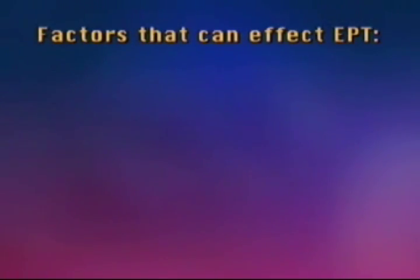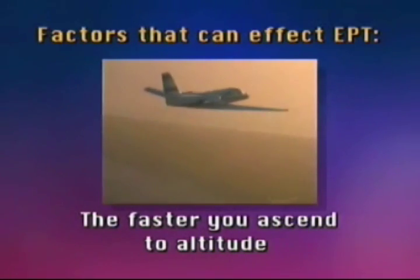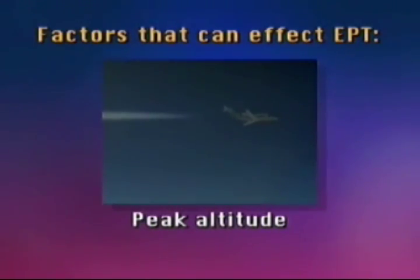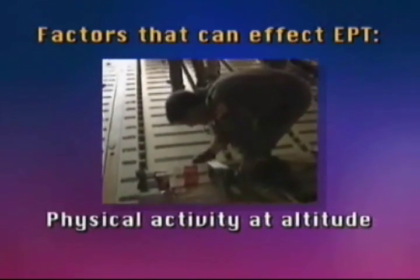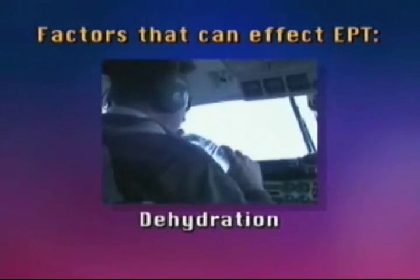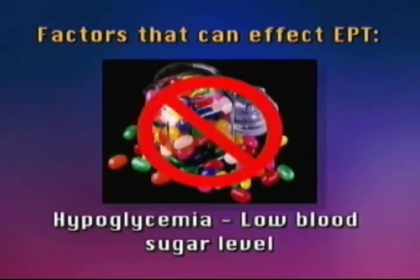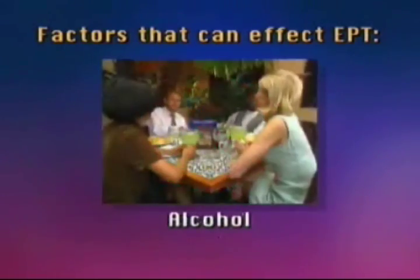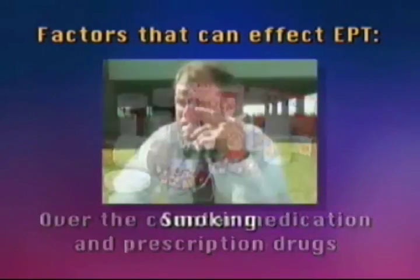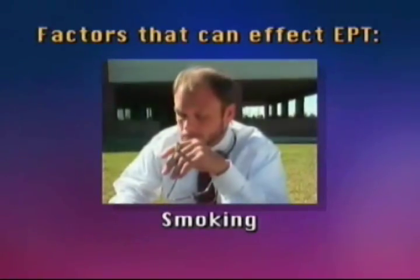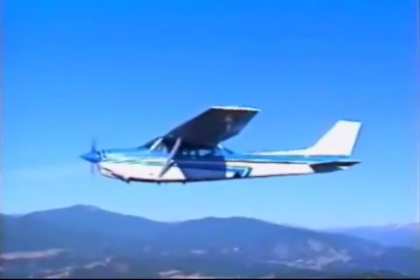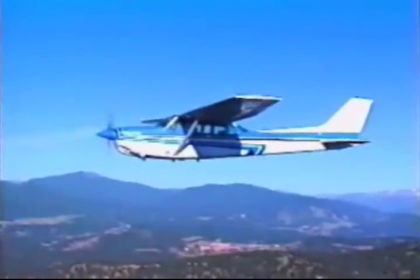Factors that can affect EPT include the faster you ascend to altitude either by rate of climb or a rapid decompression, peak altitude, physical activity at altitude, fatigue, dehydration, hypoglycemia (low blood sugar level), alcohol, over-the-counter medication and prescription drugs, and smoking. The best advice is to be aware of the limitations of the body to altitude and oxygen requirements in accordance with the Federal Aviation Regulations, FARs.